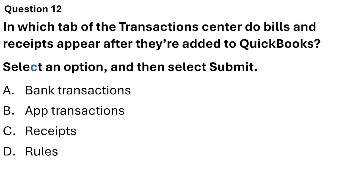Question 12. In which tab of the transaction center do bills and receipts appear after they are added to QuickBooks? The four options are: Bank Transactions, App Transactions, Receipts, and Rules. The correct answer is Receipts — Option C.